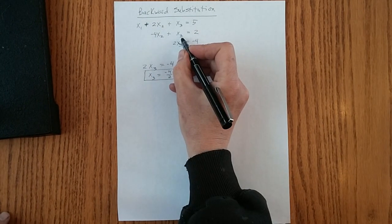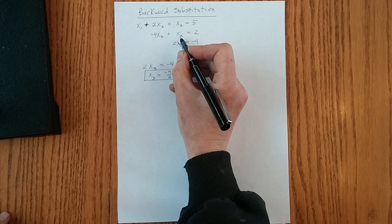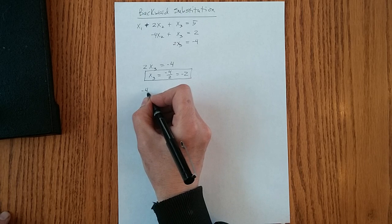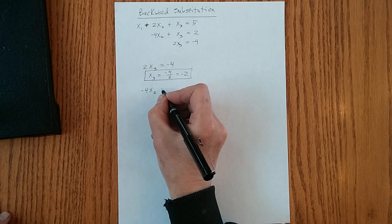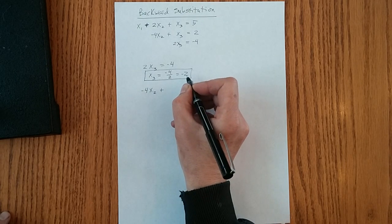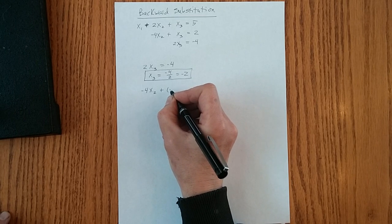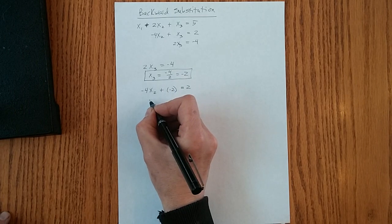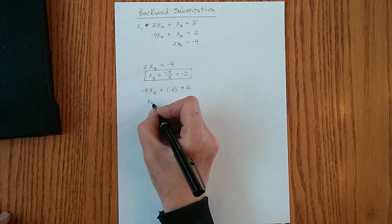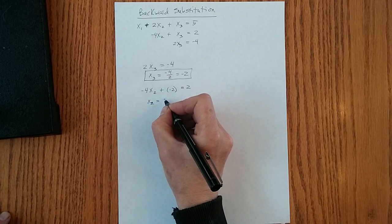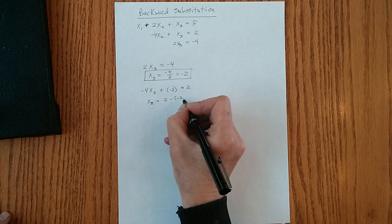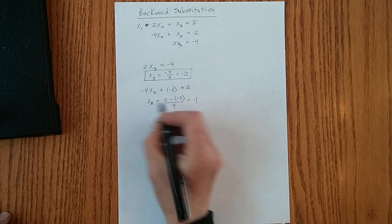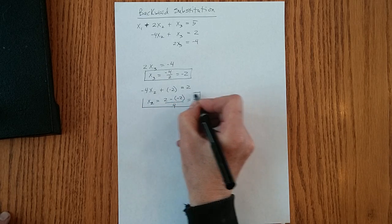We roll that up into the second equation and we solve for x sub 2. Minus 4x sub 2 plus, now we have x sub 3 here, substitute that in, equals 2. So x sub 2 equals 2 minus negative 2 over 4. So x sub 2 equals minus 1. It's our second solution.